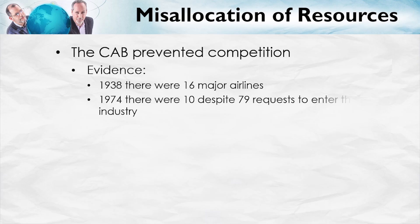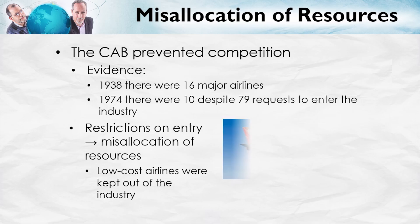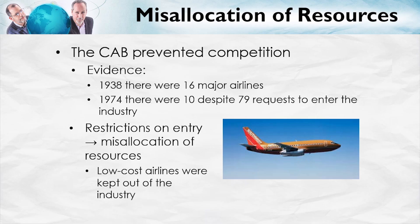Price floors and regulations, such as that provided by the Civil Aeronautics Board, created a misallocation of resources and in particular prevented competition. So in 1938, believe it or not, there were 16 major airlines. In 1974, just before deregulation, there were 10 airlines — fewer than in 1938 — despite many requests to enter the industry. Indeed, restrictions on entry misallocated resources. It meant that low-cost airlines, such as Southwest, now one of the world's largest airlines, were kept out of the industry, raising costs overall.